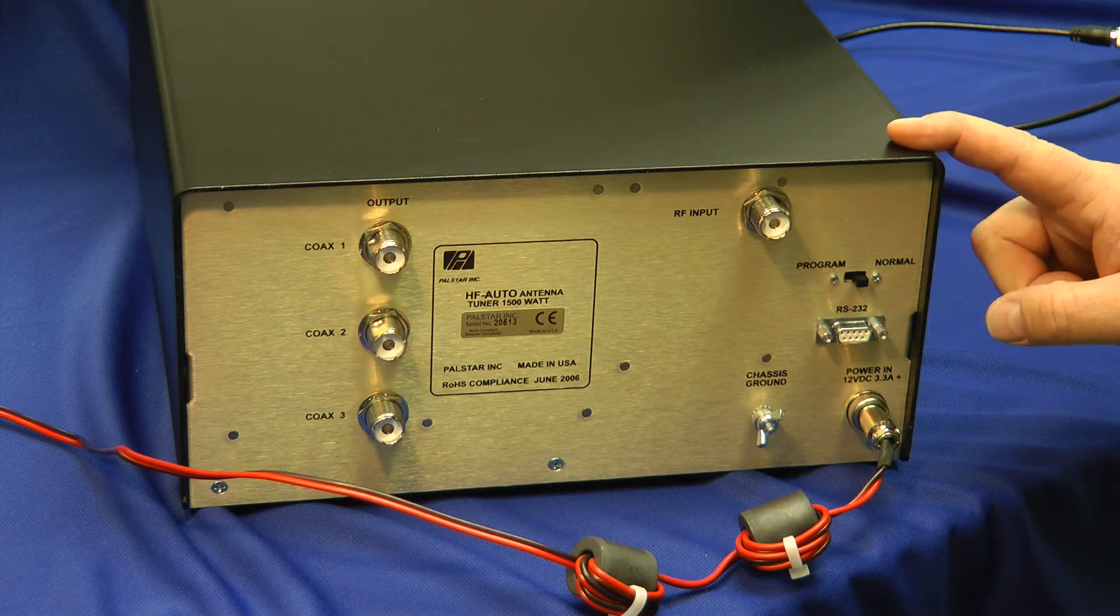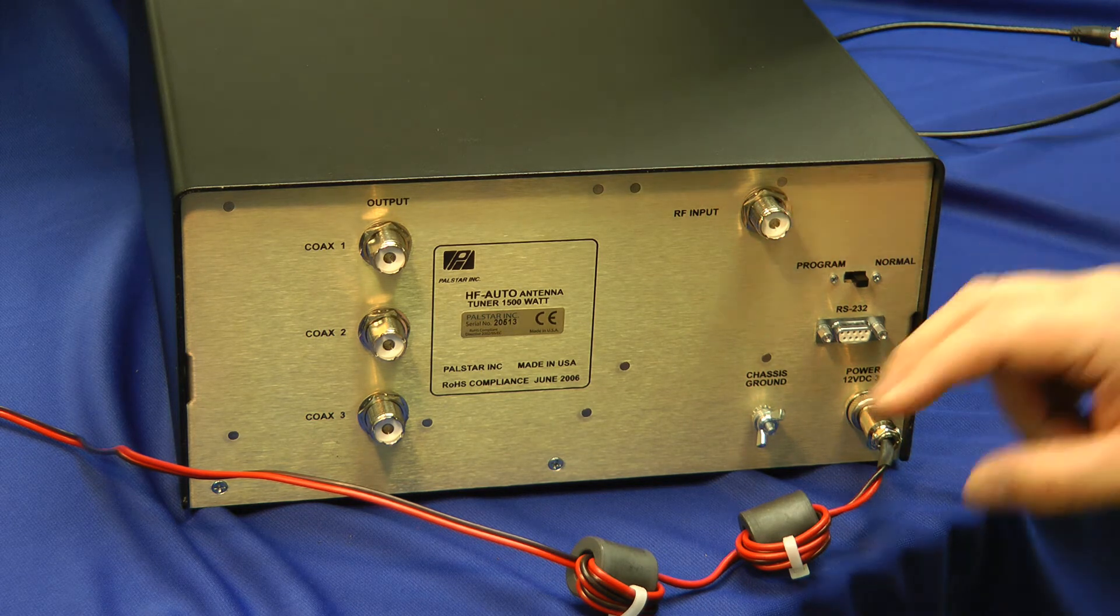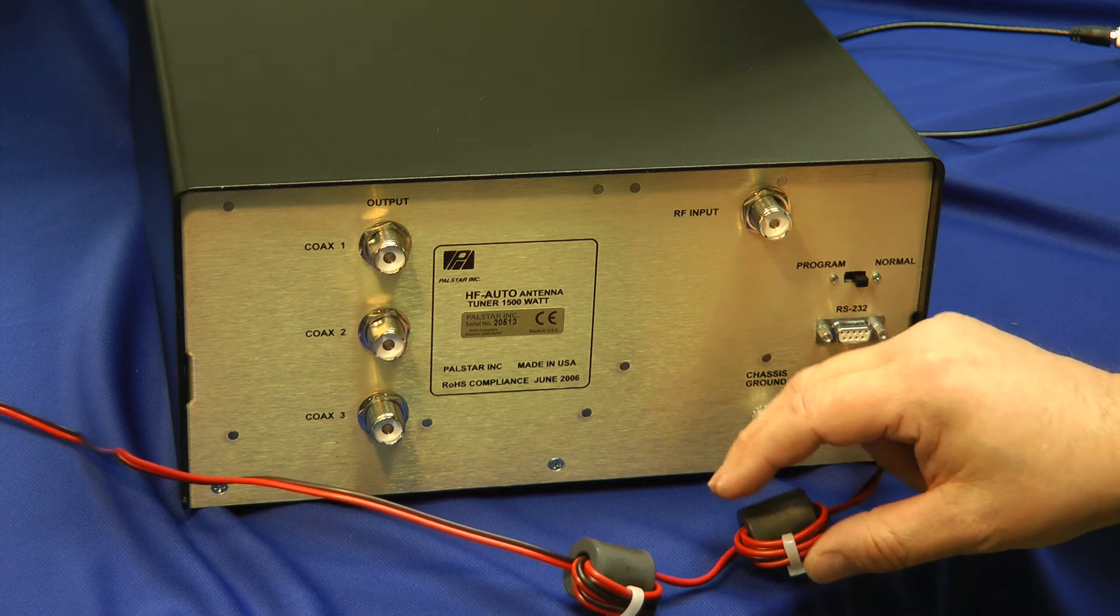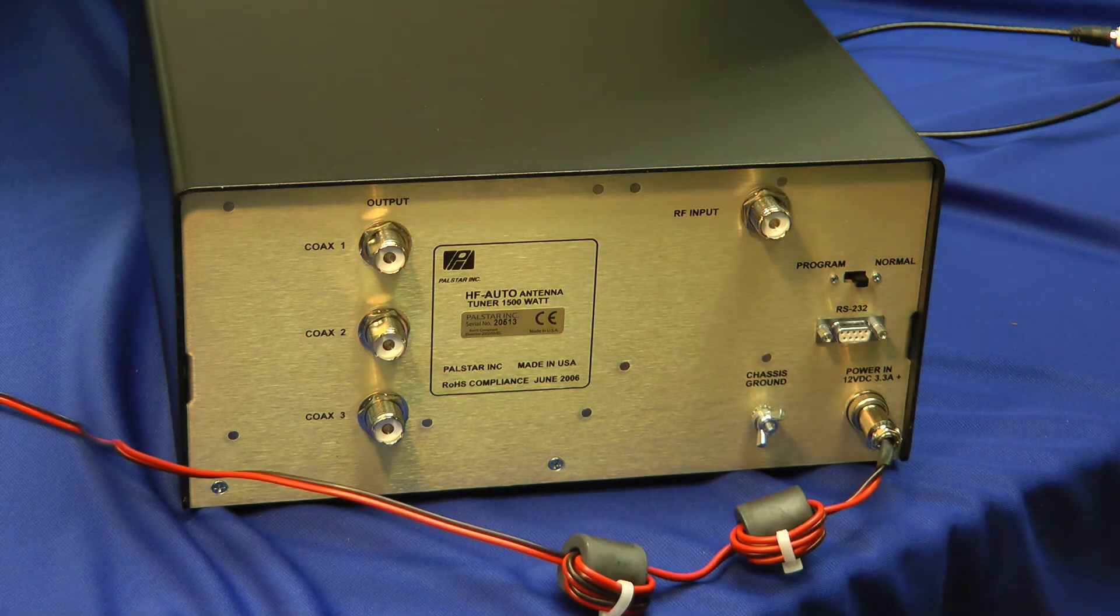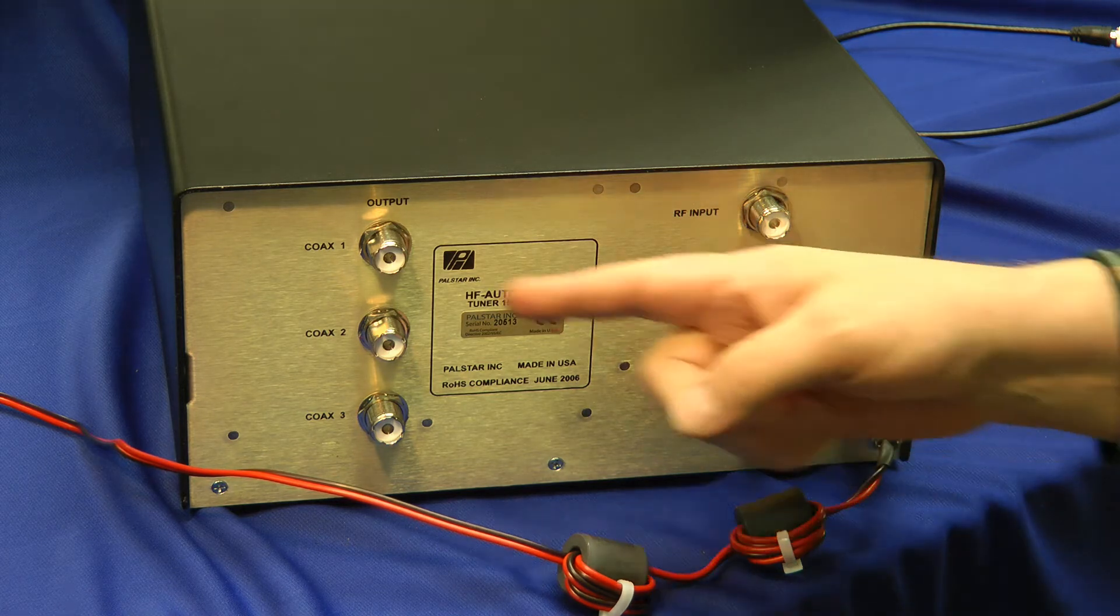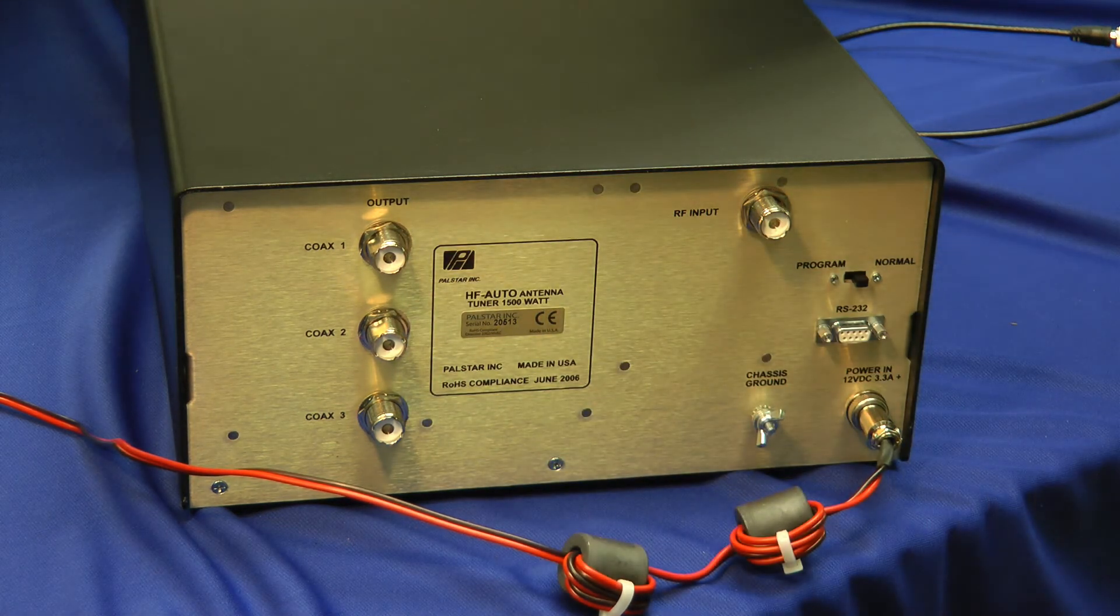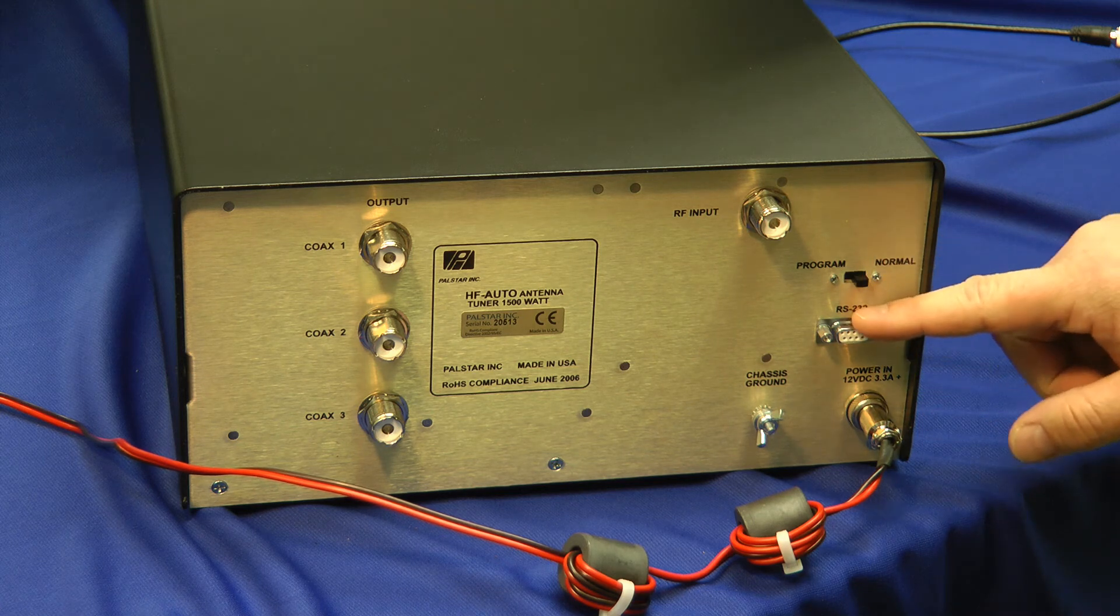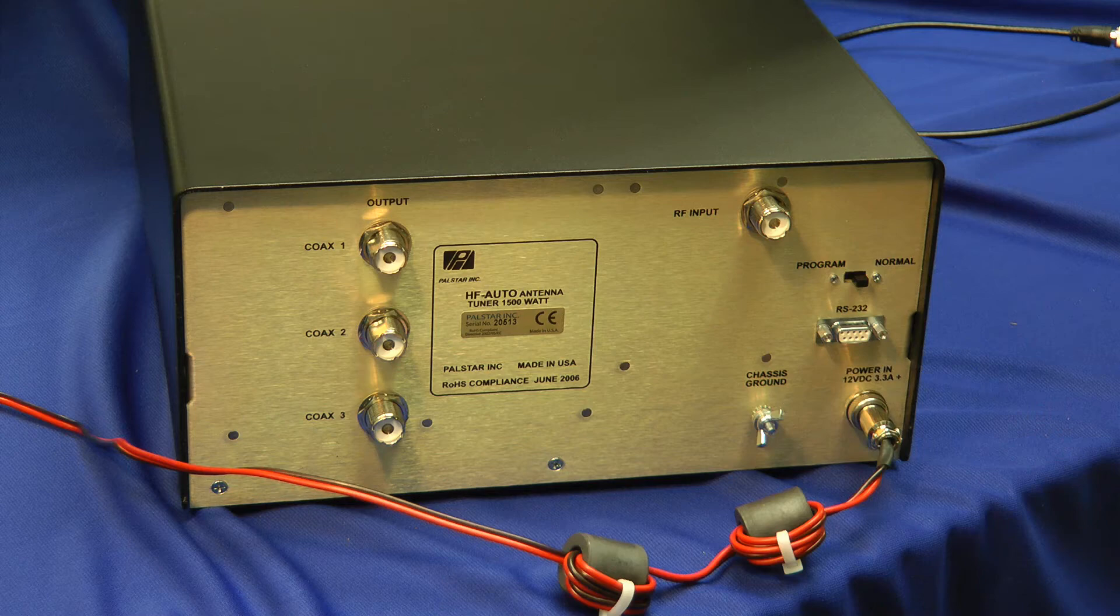Here's the back side of the HF Auto. The ferrite cores here prevent any kind of RF while the antenna tuner is tuning from going down the DC power cable back to your power supply and to some of your other equipment. We have three antenna positions available to us. Here's your RF input, a programming switch, and radio control here. And don't forget the ground connection.